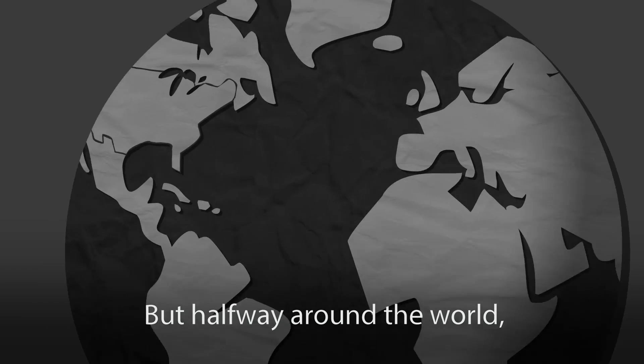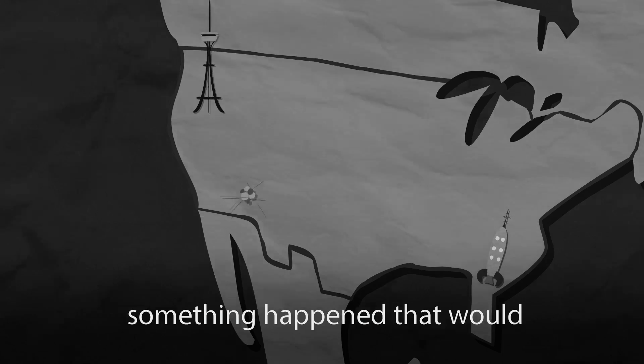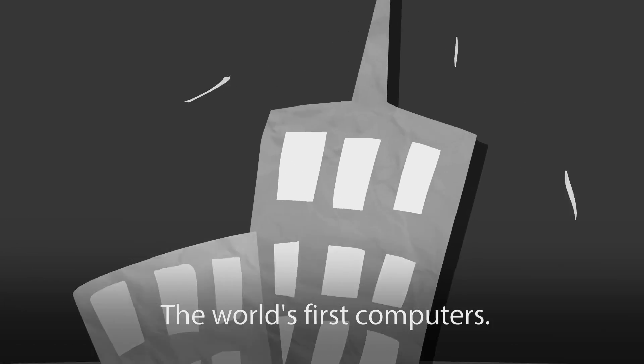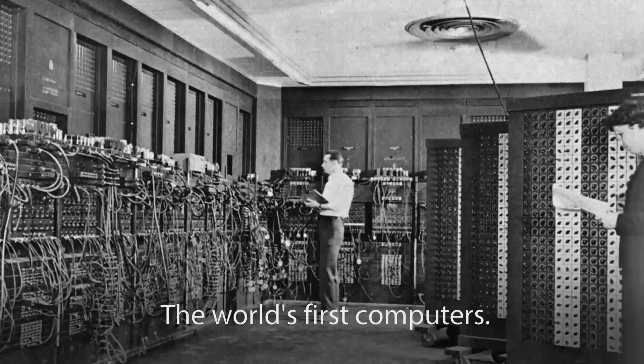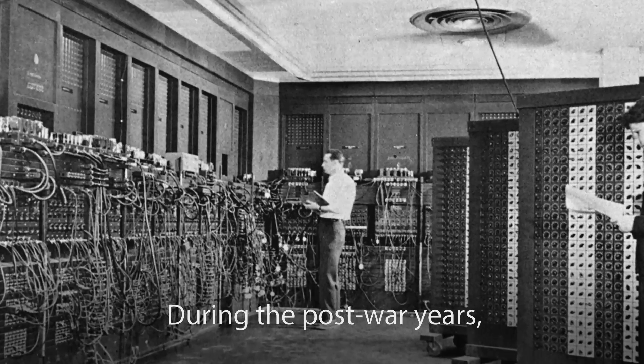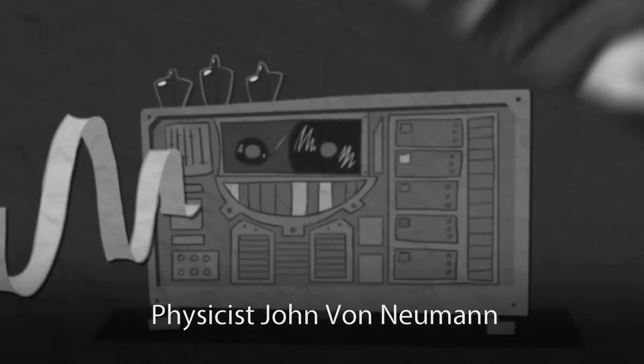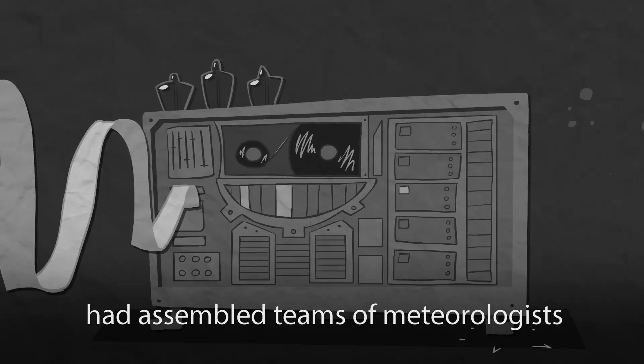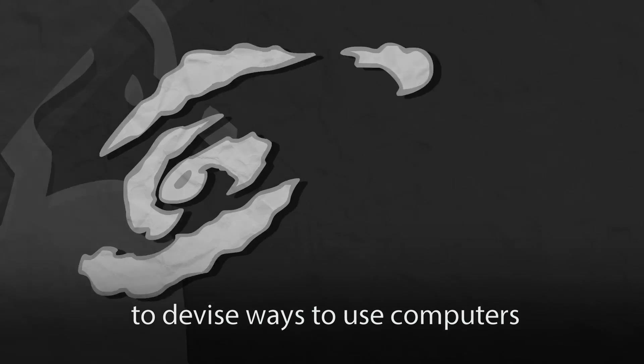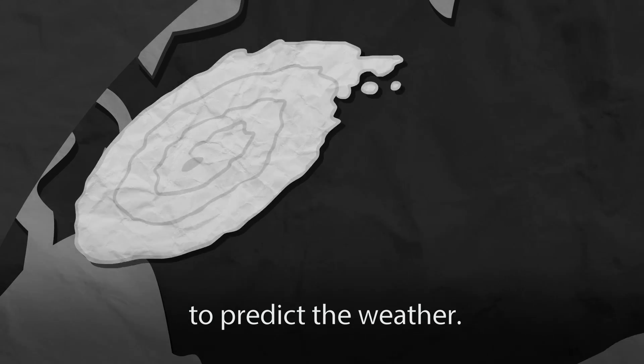But halfway around the world, something happened that would change this. Something big. The world's first computers. During the post-war years, physicist John von Neumann had assembled teams of meteorologists to test-drive them, to devise ways to use computers to predict the weather.